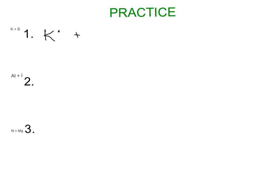Now let's practice. The first one is potassium and sulfur — you'll need a periodic table. Potassium is in family number one, so it has one valence electron. Sulfur is in family number 16, so it has six valence electrons. Sulfur needs two more, so the metal potassium is going to lose that electron over to sulfur.